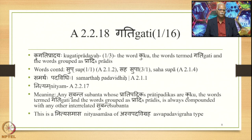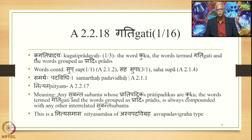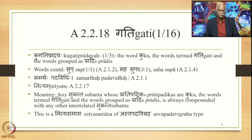The meaning of Kugatip Pradayaha is: the word Ku, the words termed Gati, and the words grouped as Pradis. Any Subanta whose Pratipadikas are Ku, the words termed Gati, and the words grouped as Pradis is always compounded with any other interrelated Subanta. This is a Nitya Samasa of Aswapada Vigraha type.